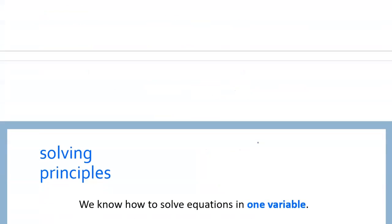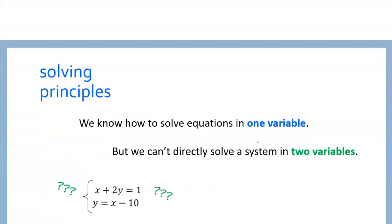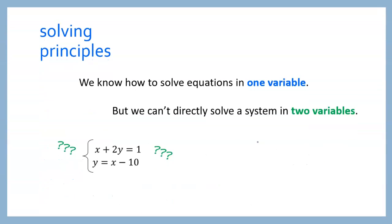But we can't do that with systems of equations because we have two variables. We solve for one variable and we just get the other variable on the other side — it doesn't reduce down to a number. So we can't solve these directly.